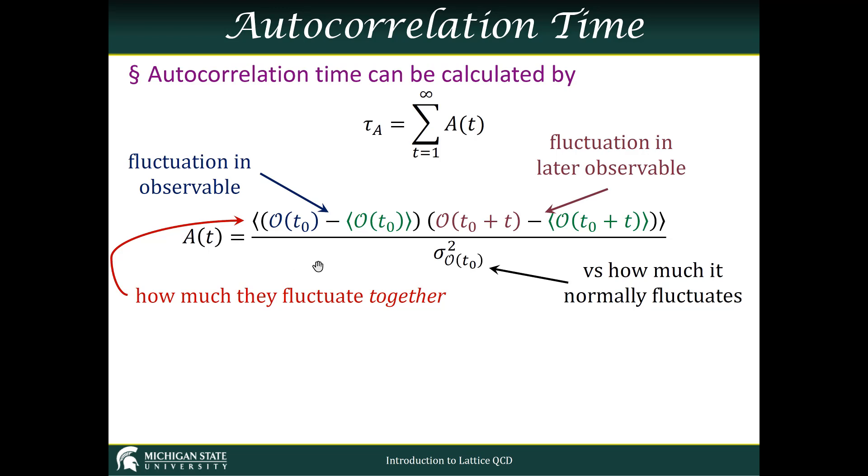This is somewhat complicated, so let's break it apart. In the numerator, we have the fluctuation of the observable. So here's the observable at some time t₀.